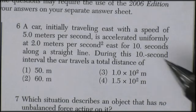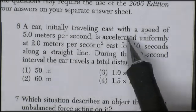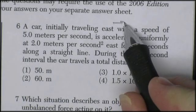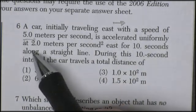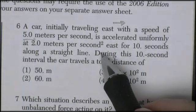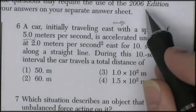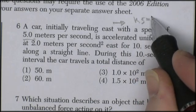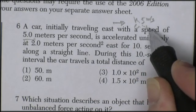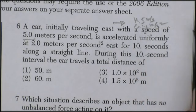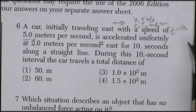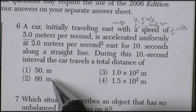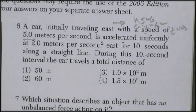Question six. A car initially traveling east with a speed of 5 meters per second is accelerated uniformly at 2 meters per second squared east. So it's got an initial velocity of 5 meters per second, acceleration of 2 meters per second squared, time of 10 seconds. During this 10-second interval, the car travels the total distance of.